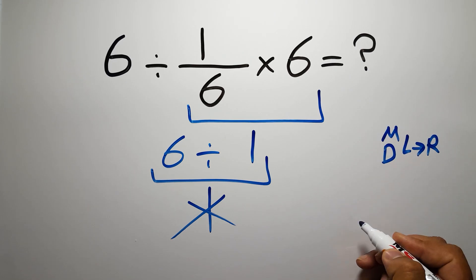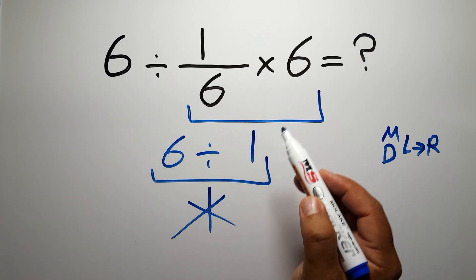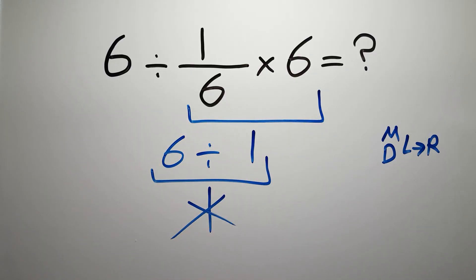And we have to go from left to right, so here first we have to do this division, not this multiplication. If you do this multiplication before this division, it is wrong.